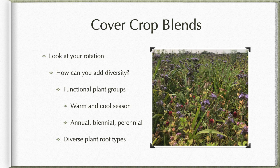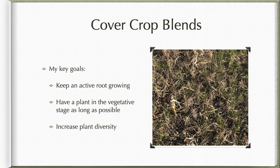When looking at these cover crop blends, take a look at your rotation and ask: how do you add more diversity to it? We want to look at these functional plant groups — warm-season, cool-season, annuals, biennials, perennials — and increase diversity in plant root types that we're growing. My key goals that I keep stressing when doing blends for people are: keep an active root growing in that soil, keep a plant in that vegetative stage as long as possible, and increase the plant diversity, which goes back to those functional plant groups. It doesn't have to be every year, but in our rotation we should have something that checks off those boxes.